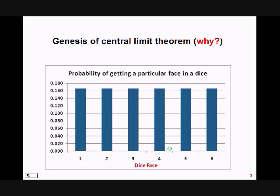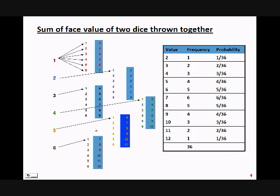Let's first understand the genesis of central limit theorem — essentially why it does what it does. Let's take a game of dice. When you throw a dice you will get either one, two, three, four, five, or six. The probability of getting any value between one to six is the same: one by six. But the moment you throw two dice together and take the sum, you can get a minimum of two and a maximum of twelve.